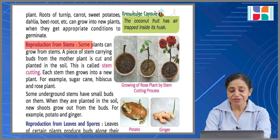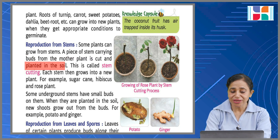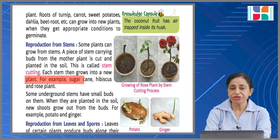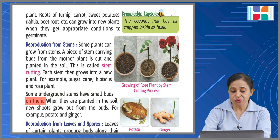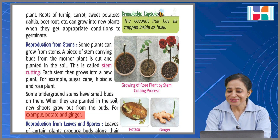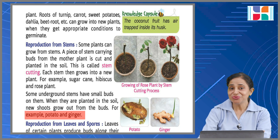Reproduction from stems: some plants can grow from stems. A piece of stem carrying buds from the mother plant is cut and planted in the soil — this is called stem cutting. Each stem then grows into a new plant. For example, sugarcane, hibiscus, and rose. Some underground stems have small buds on them; when planted in the soil, new shoots grow out from these buds. For example, potato and ginger — you may have noticed that when a potato is left for some time, new roots and shoots begin to emerge from it.